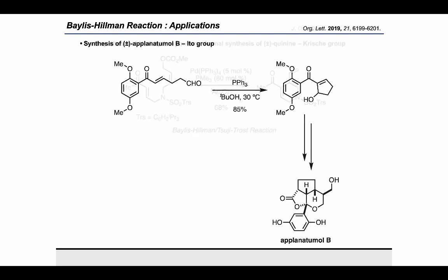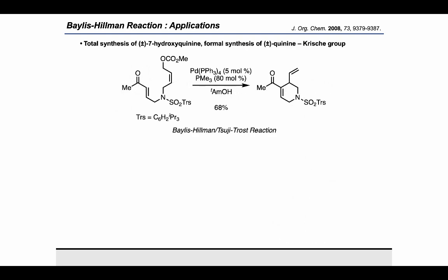Thinking about how the type of activation seen in the Baylis-Hillman reaction could be applied in combination with a palladium π-allyl electrophile, the Crochet group found that it was possible to carry out a Baylis-Hillman–Tsuji-Trost reaction to furnish a cyclized dihydropyridine product.